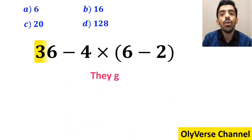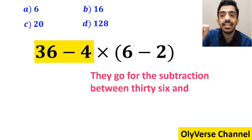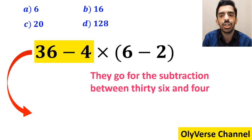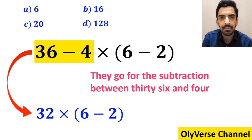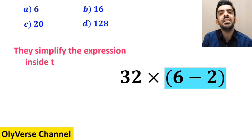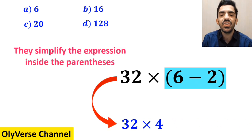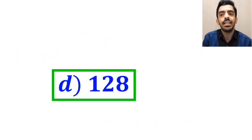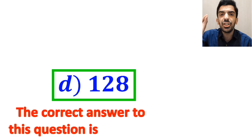And the next step they go for the subtraction between 36 and 4 which I have highlighted in yellow. Instead of this expression they write 32 times (6 minus 2). In the final step they simplify the expression inside the parenthesis and replace it with 32 multiplied by 4 which gives them the answer 128. And immediately they quickly say that the correct answer to this question is option D.